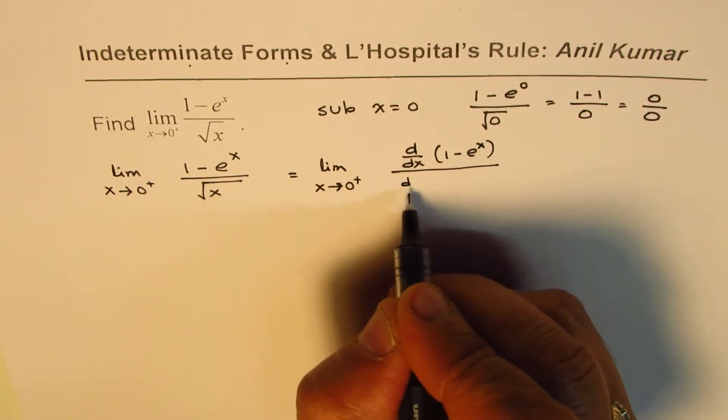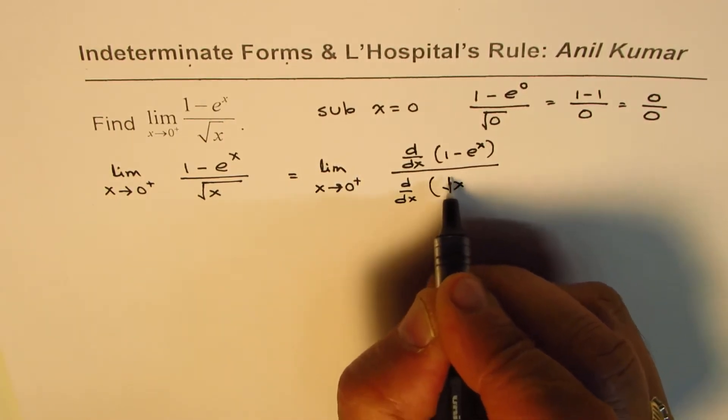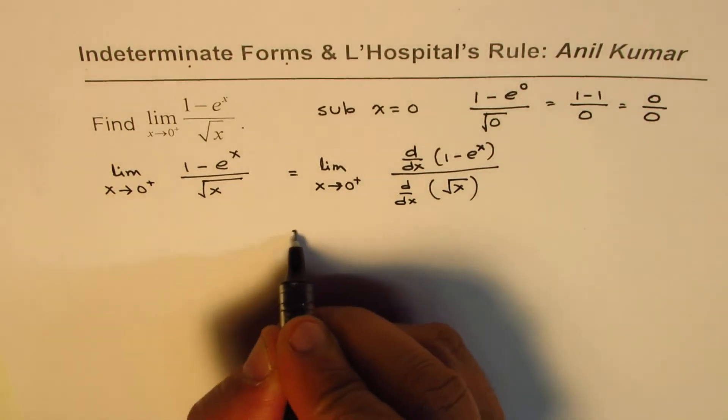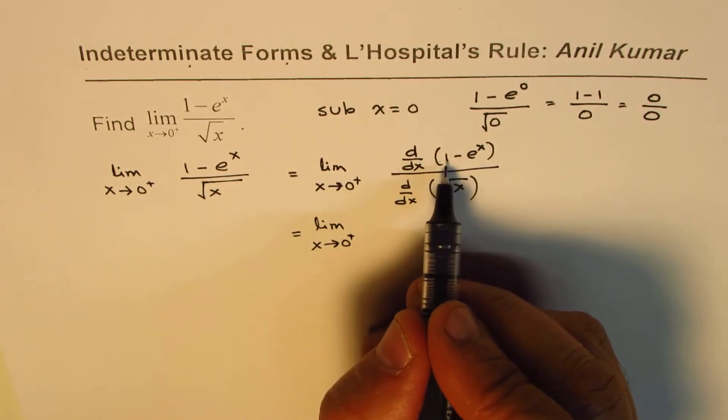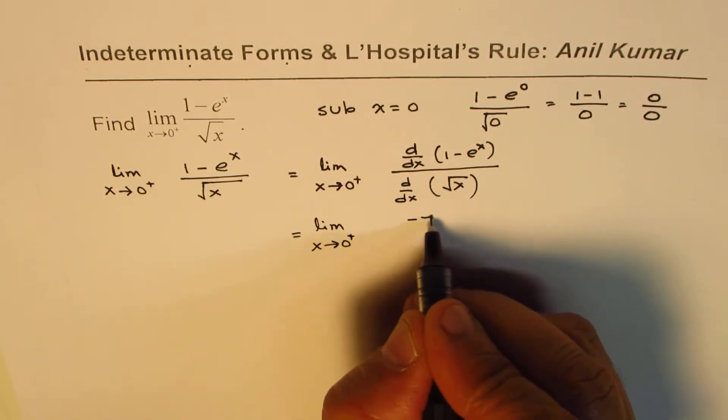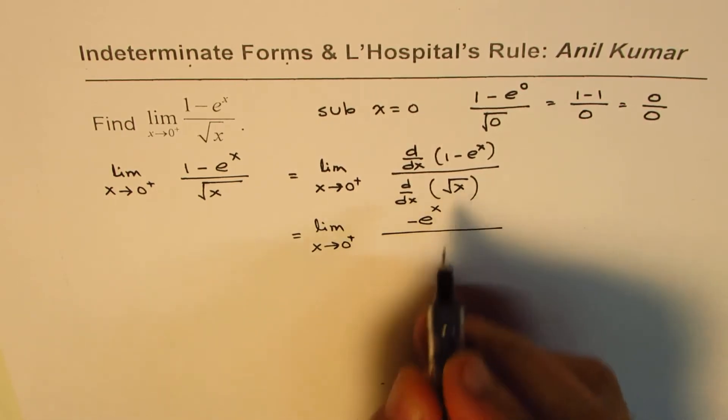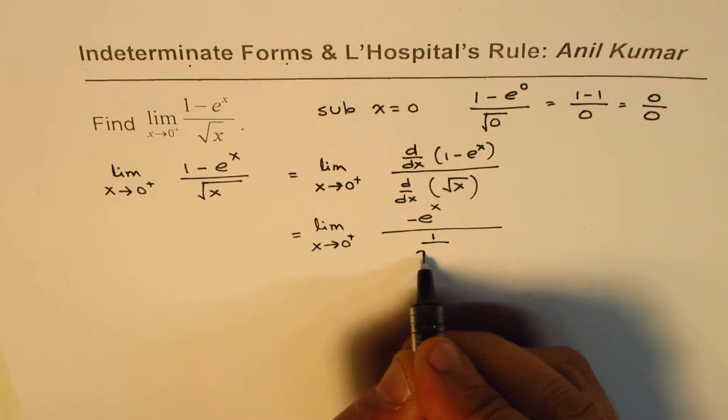Now limit x approaches 0+, derivative of 1 is 0, derivative of e^x is e^x, so we get minus e^x in the numerator. And in the denominator, derivative of square root x is 1 over 2 square root x.